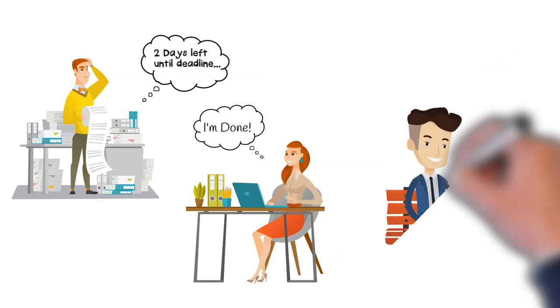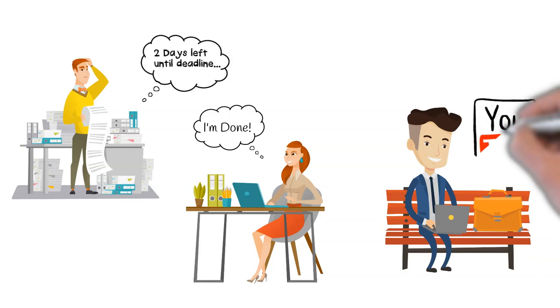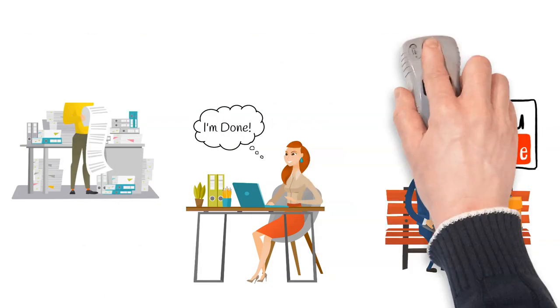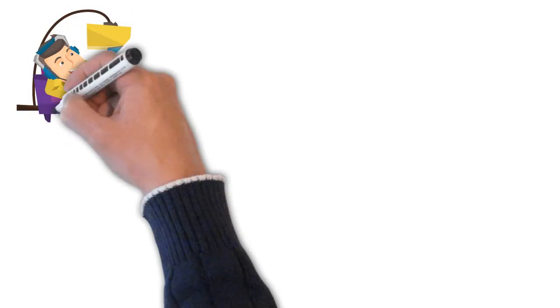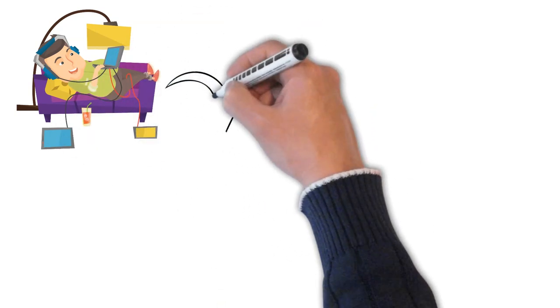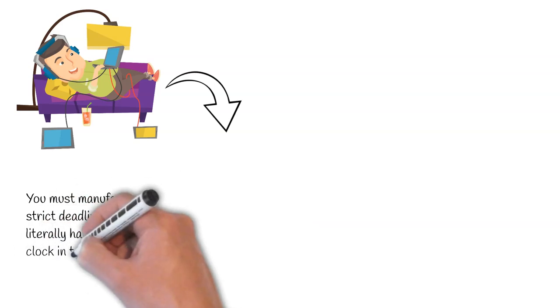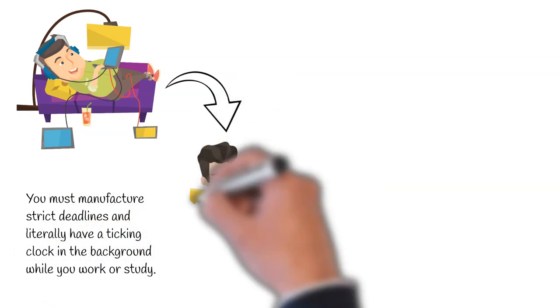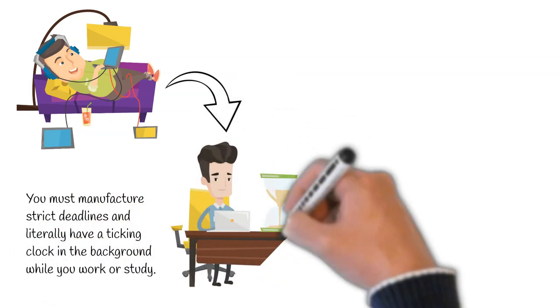For a complete expansion of Parkinson's Law, watch our video that we'll link to in the description box. According to Parkinson's Law, if we have time to procrastinate, we will. To combat this, you must manufacture strict deadlines and literally have a ticking clock in the background while you work or study.